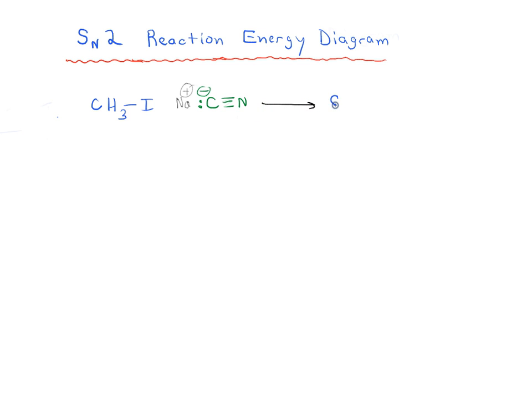we're going to get CH3. Actually, let's redraw it so that we show the bond CH3C and C triple bond N as well as NA plus, and we're going to have I minus as our leaving group.